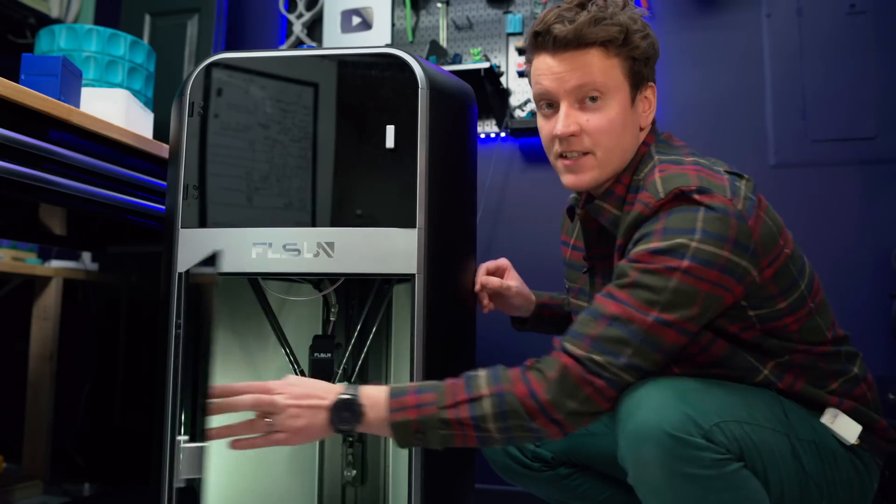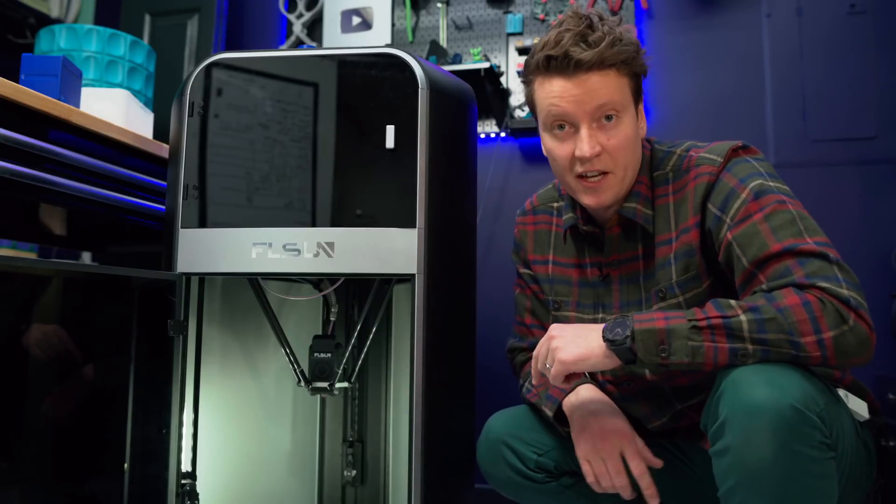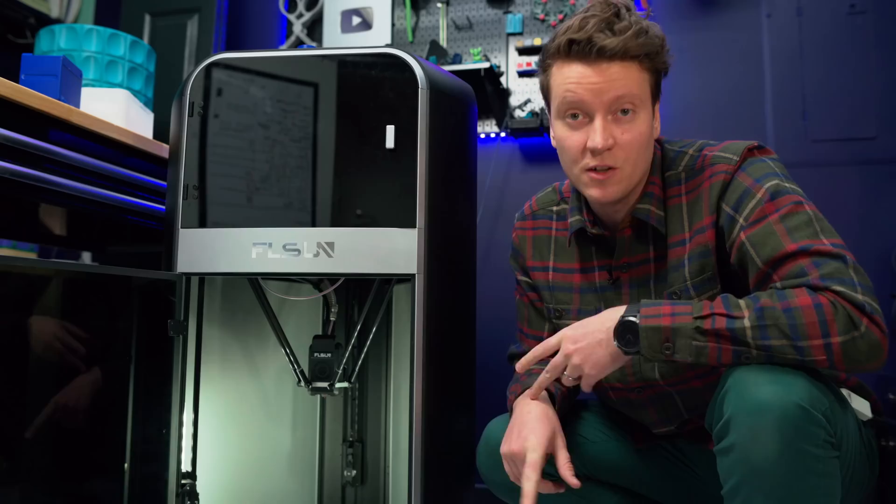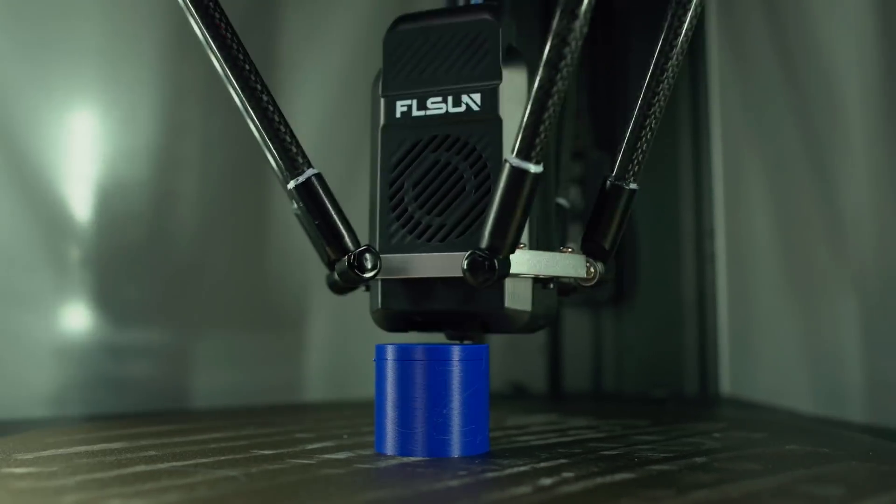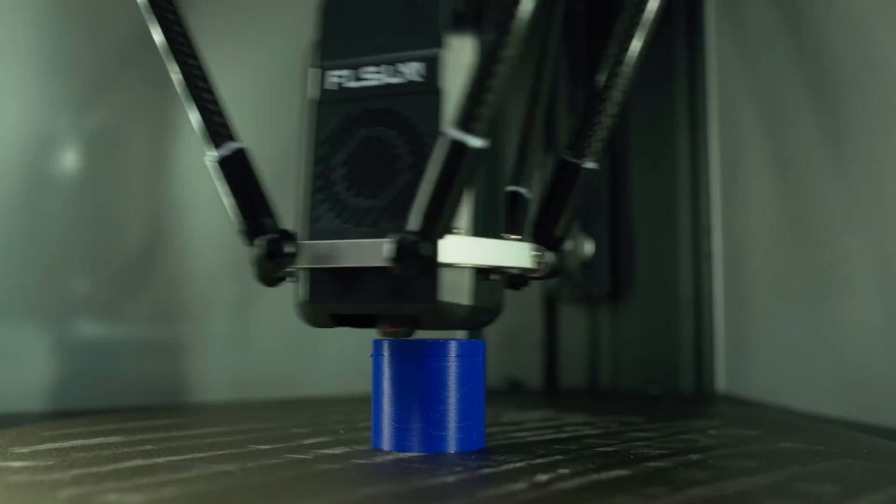This is the FL Sun S1 Pro. It's my first Delta printer to test out, and it is a very fast printer. But a lot more goes into a 3D printer than it being fast and having a good motion system. So today we're going to talk about all the features I really like about this 3D printer and some things it could still use and work on.